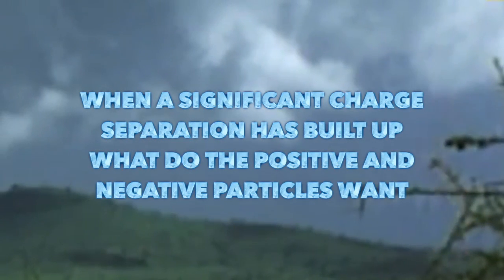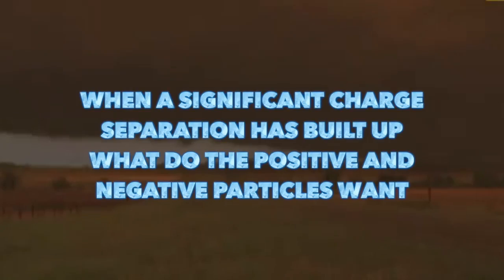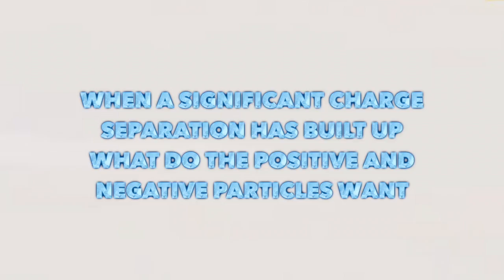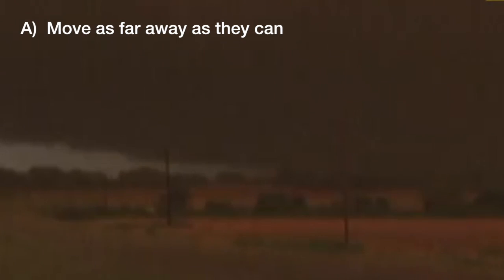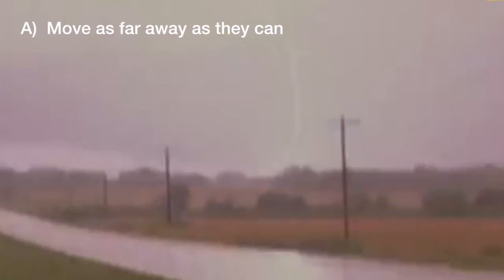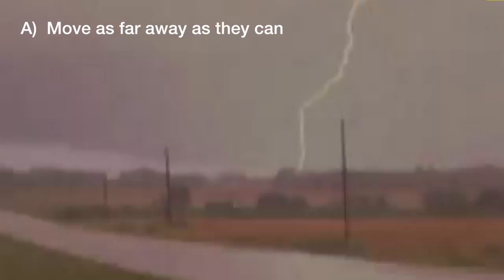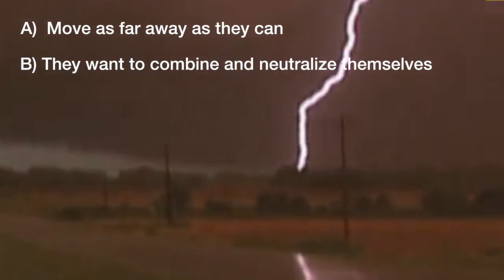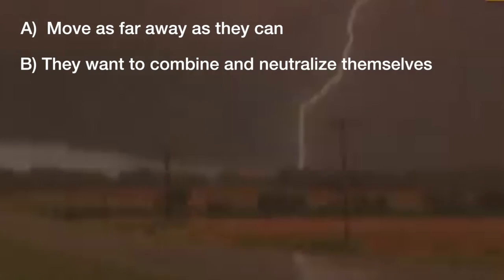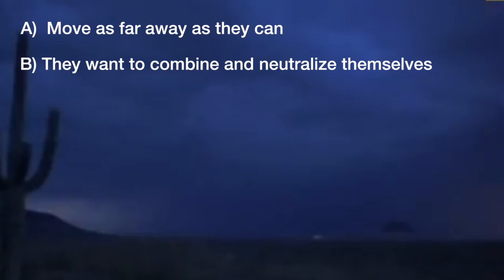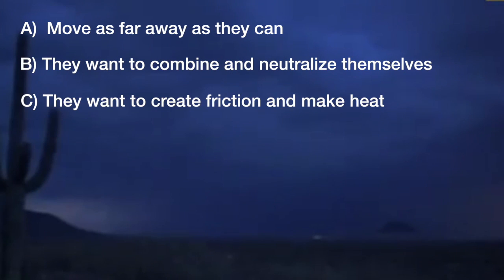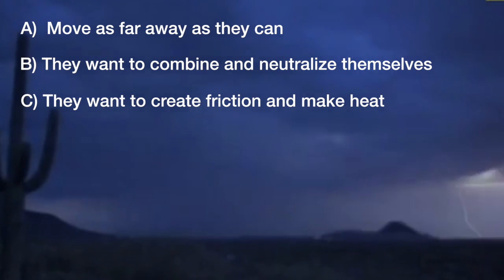When a significant charge separation has built up, what do the positive and negative particles want to do? A, move as far away as they can, pushing off each other, creating a spark. B, they want to combine and neutralize themselves. Or C, they want to create friction and make heat so they can strike down as lightning.